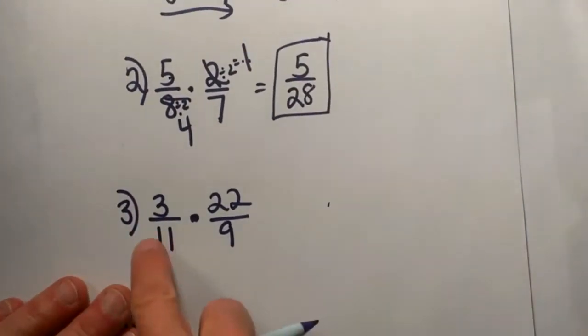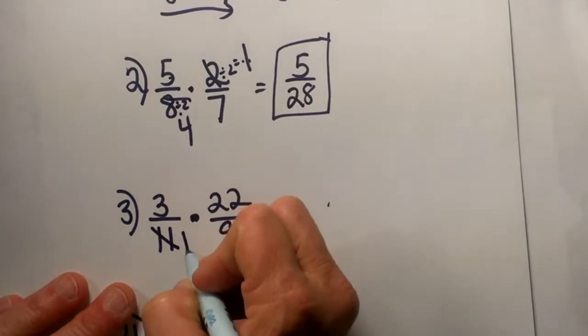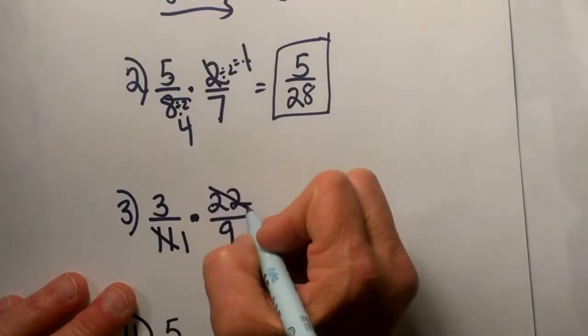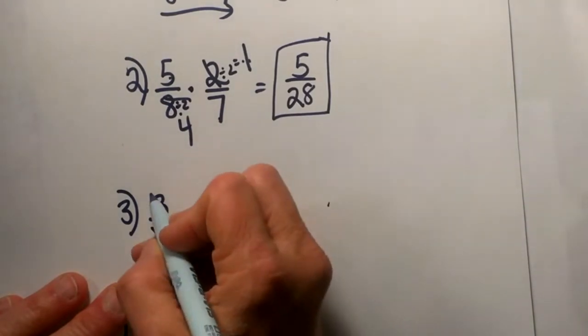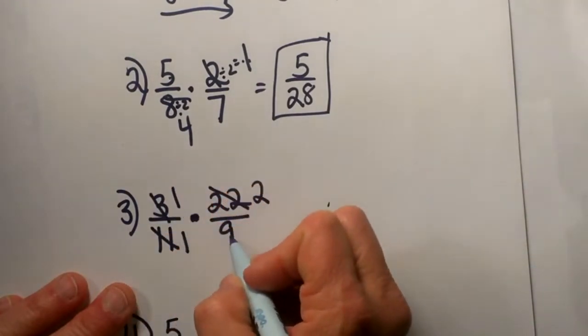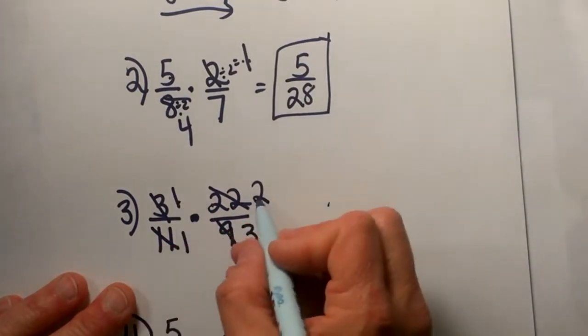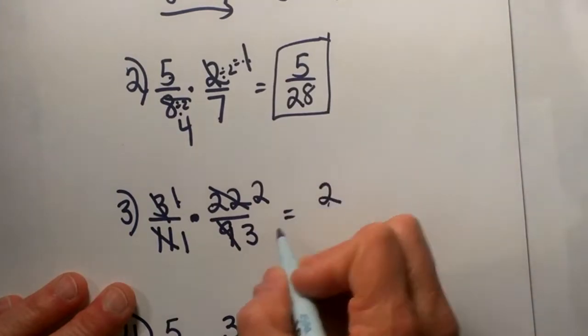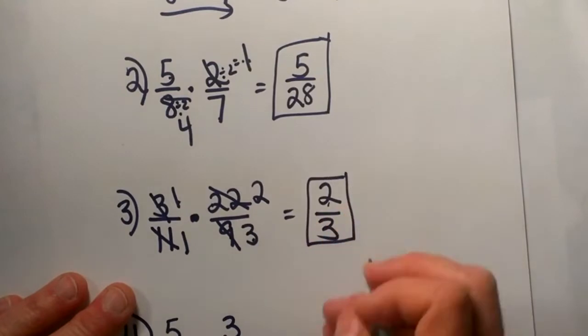Let's look at number 3. Number 3 is very easy to see some common factors. I can see that 11 and 22 can reduce, so let's go ahead and reduce those. 11 goes into itself one time, and 11 goes into 22 two times, and then 3 and 9 can both reduce. So 3 goes into itself once, and 9 divided by 3 goes 3 times. Now let's multiply the numerators together. 1 times 2 is 2, and 1 times 3 is 3, so 2 thirds is my final reduced answer.